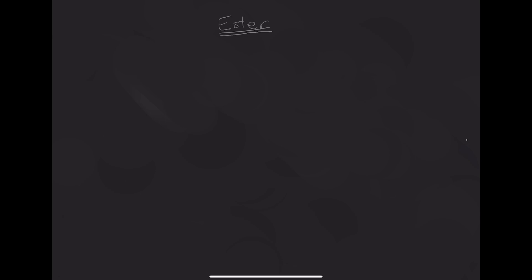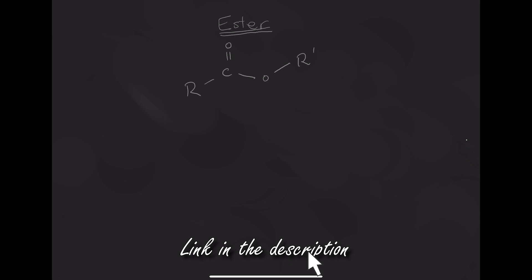What an ester is, is when you have an R group - an alkyl group. You've got a single bond to a carbon that's double bonded to an oxygen. That carbon again is single bonded to an oxygen, and that oxygen is single bonded to another R group. I'll put an apostrophe here to show that it doesn't have to be the same as the first R group. If you don't understand this chemical notation, I'll put a link in the description so you can understand what this diagram actually means.